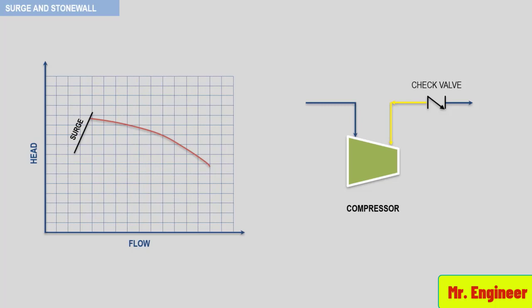This backflow causes the volume to be evacuated, resulting in a low discharge pressure. Since the head required by the process system is a function of discharge pressure, the head required by the process will decrease, allowing the compressor to operate in the high flow region of the performance curve once again.